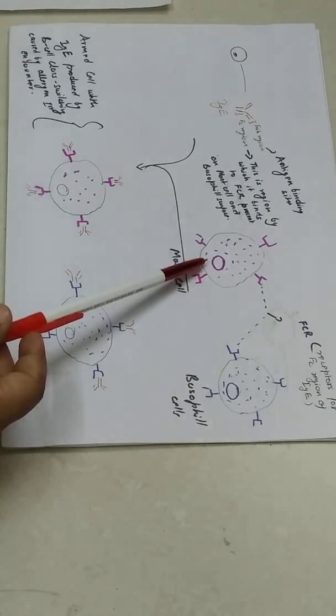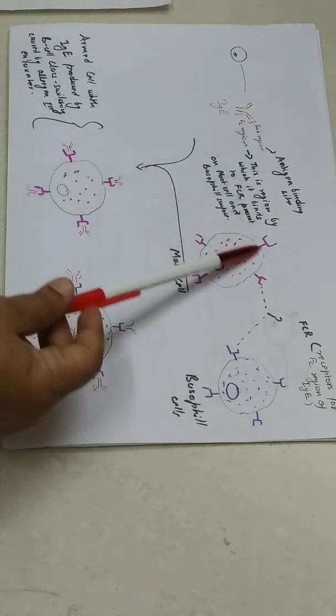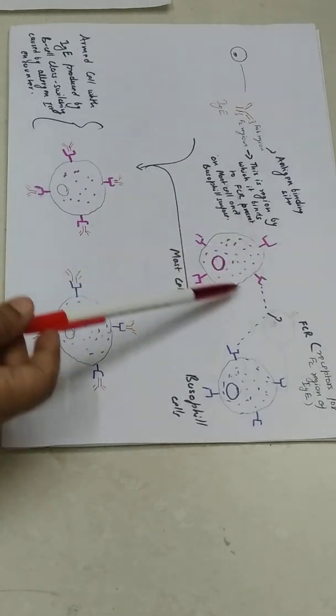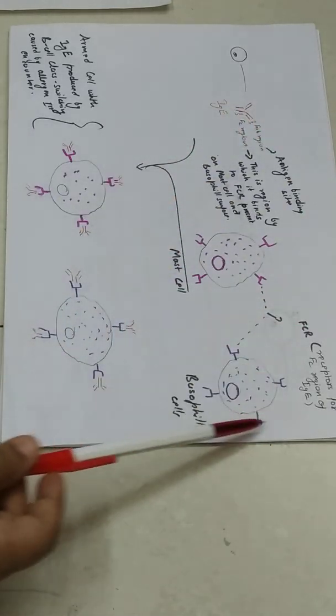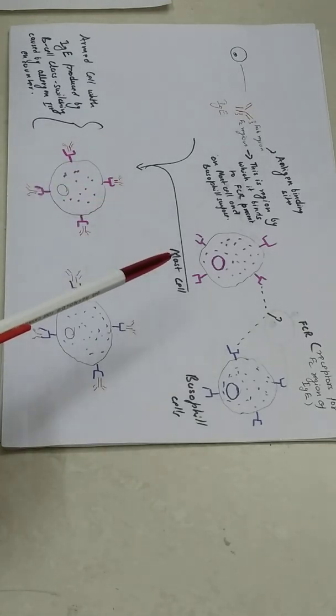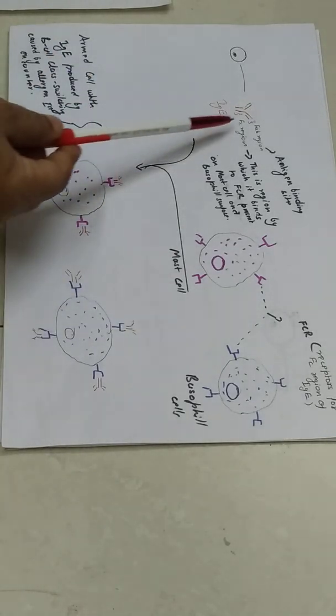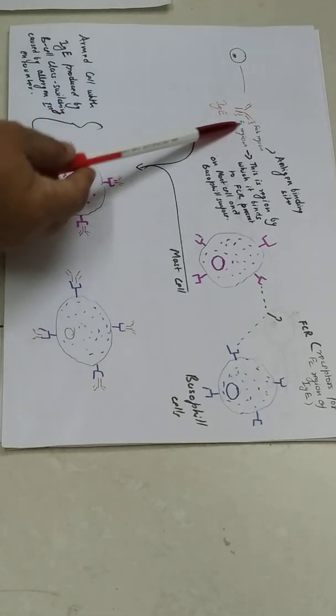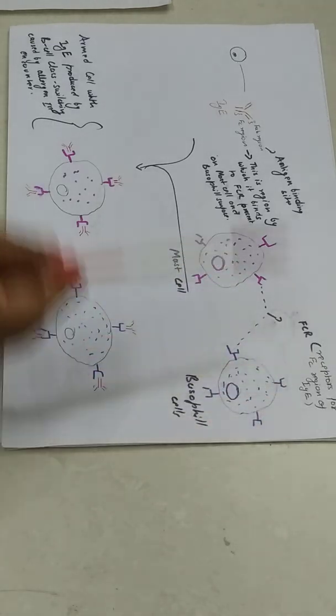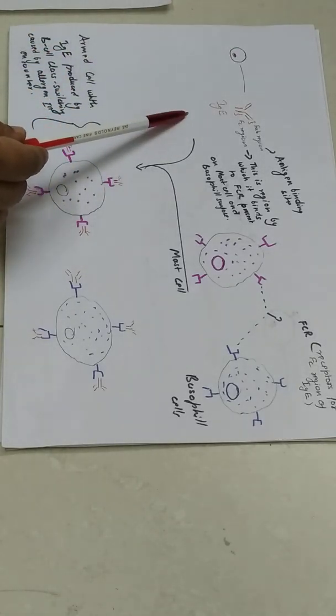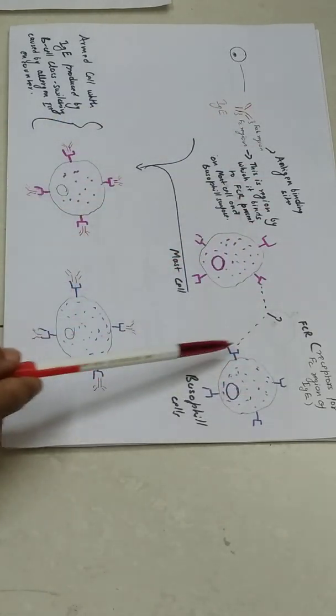What happens? These mast cells, inside they have chemical mediators. And on the surface they have some receptors which are called FcεRs. Similarly, basophils also have these receptors which are called FcεR. What is FcεR? FcεRs are the receptor for Fc region of IgE. These IgE produced after class switching by B cells bind to these receptors on mast cells and basophil cells.